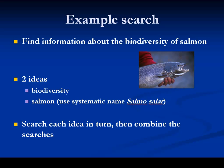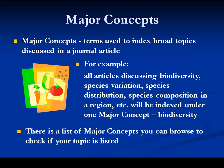Often when I'm searching a library database I would need to think of all the different terms authors would have used to describe a topic. However, Biosis have created a number of indexes that mean I don't need to think of all these terms — instead I use one term from their list. For example, major concepts is a list of terms used to index broad topics discussed in a journal article.